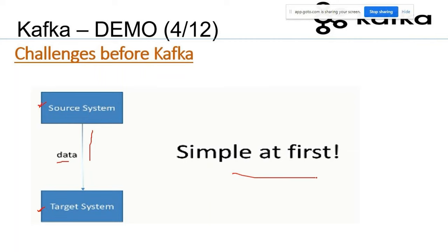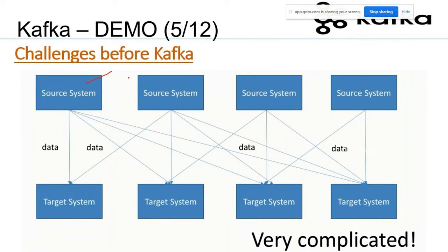Now consider four source systems and four target systems, where each source system needs to talk to every target system. Look at how complicated the architecture becomes with just eight systems. In real time, any project could have millions of systems. Establishing and managing communication among all those applications becomes highly, highly complex. To make this simplification possible, Kafka came into picture.